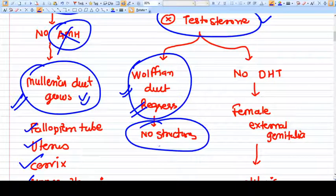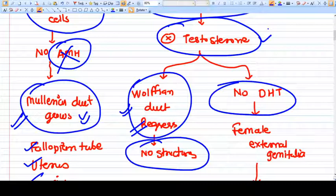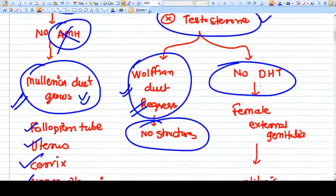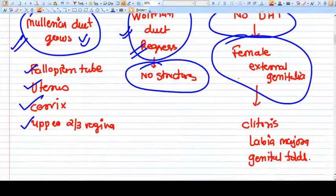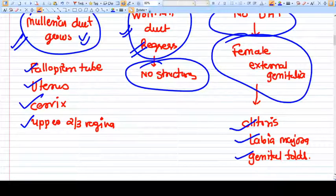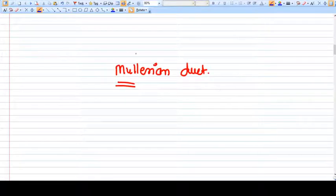We don't have testosterone, then this testosterone will not be transformed into DHT, that is dihydrotestosterone, which is a very active sexual hormone. And that's why the genitalia, the external genitalia, will be developed into female type like clitoris, labia majora, genital folds, like that.